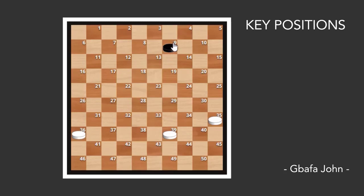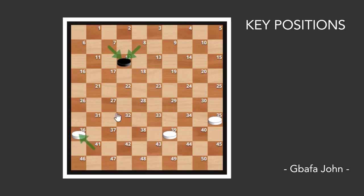So now let's look at the first key move. Let's say black plays from 8 to 12 or 7 to 12. How do you calculate the move? With this position, white can move his piece: if white has a piece at 41, white can move to 36. If white has a piece at 43 or 44, 44 can move to 39 or 43 can move to 39. If white has a piece at 35, 35 can move to 30.